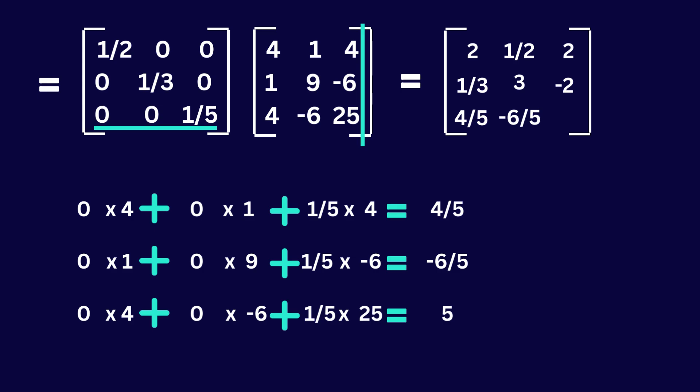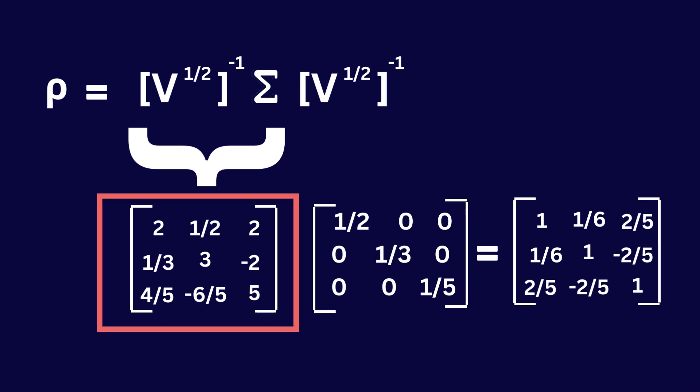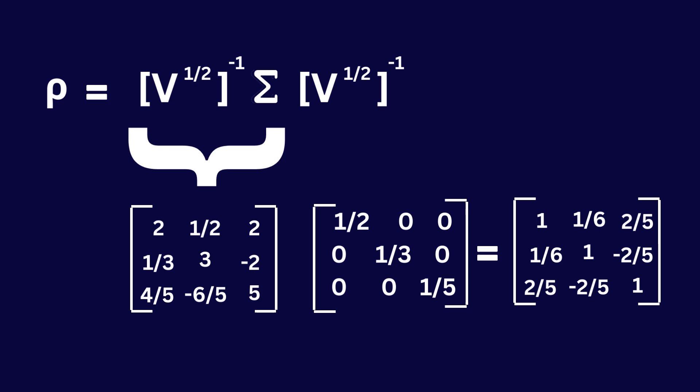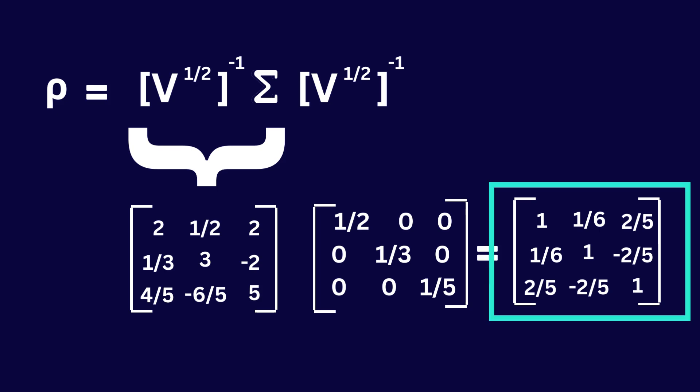Consider the third row of the first matrix and the third column of the second matrix: 0 multiplied by 4 is 0, 0 multiplied by minus 6 is 0, and 1 over 5 multiplied by 25 equals 5 — so our overall answer is 5, I will put 5 here. Now we have a new intermediate matrix. This new matrix should then be multiplied by the inverse of the standard deviation matrix. After multiplying these two matrices you will get the final result — this is our correlation matrix.